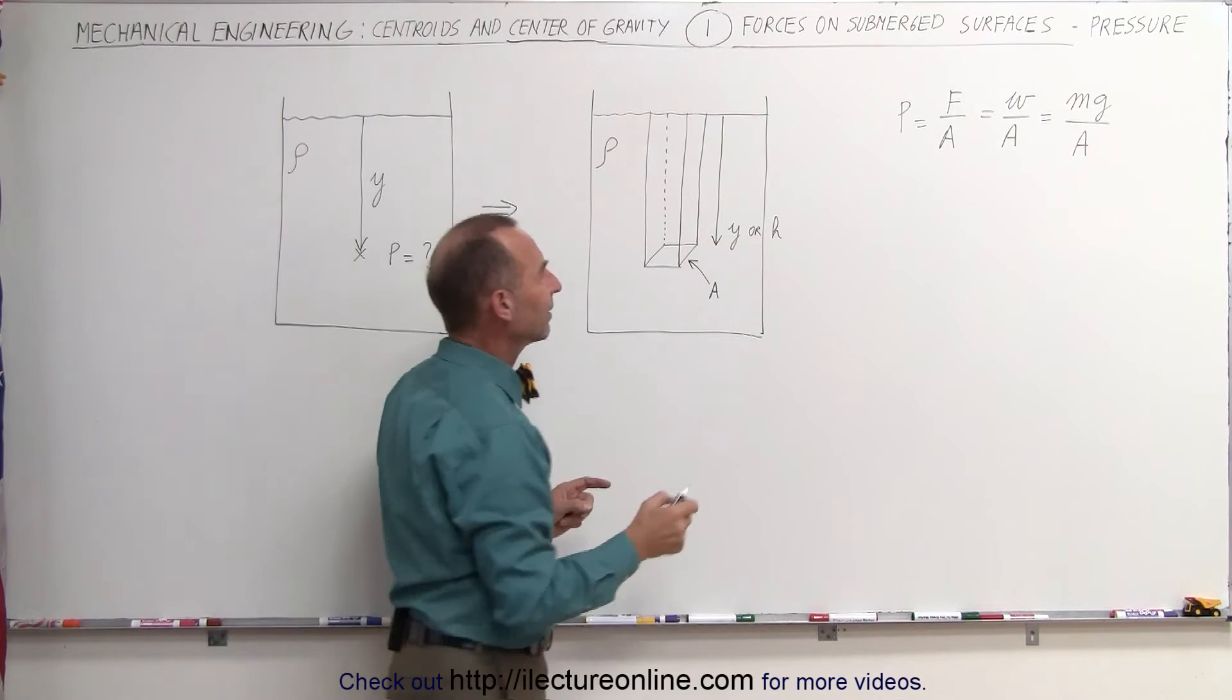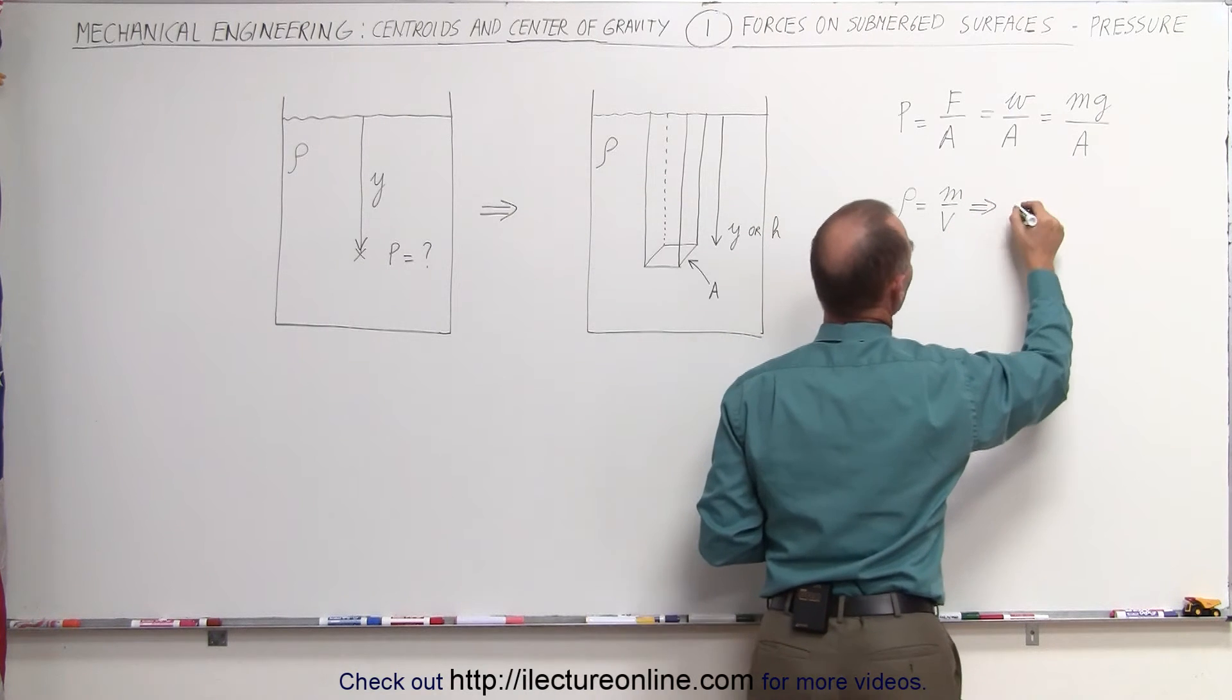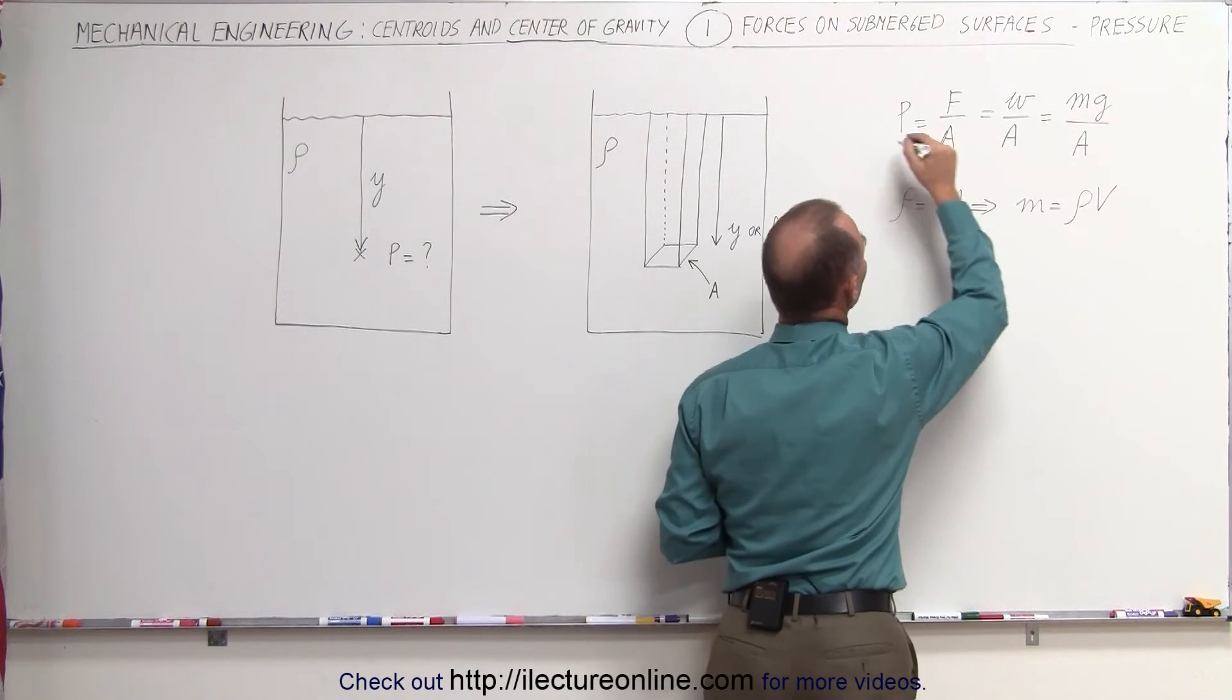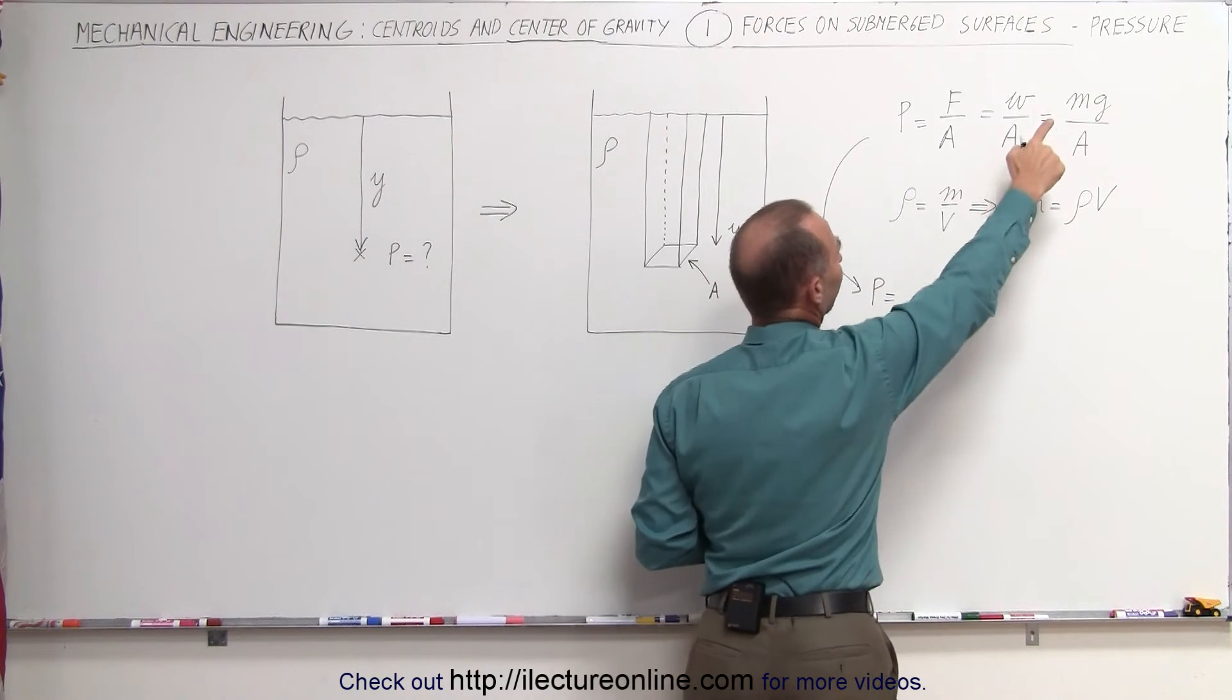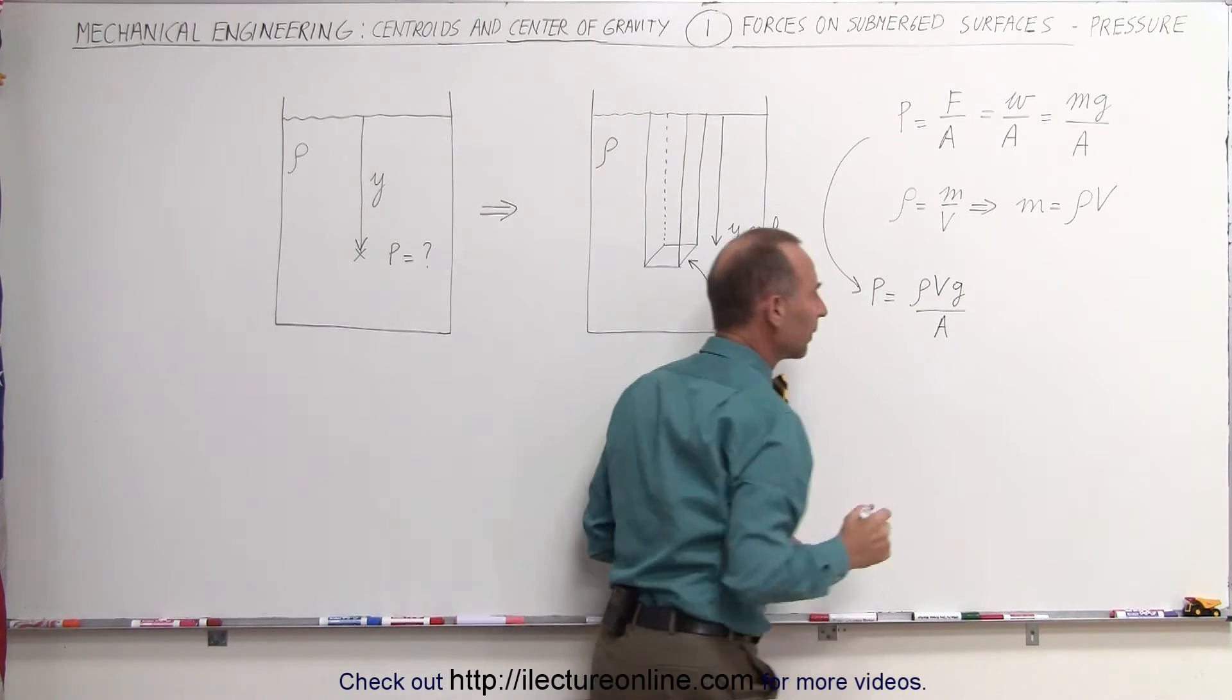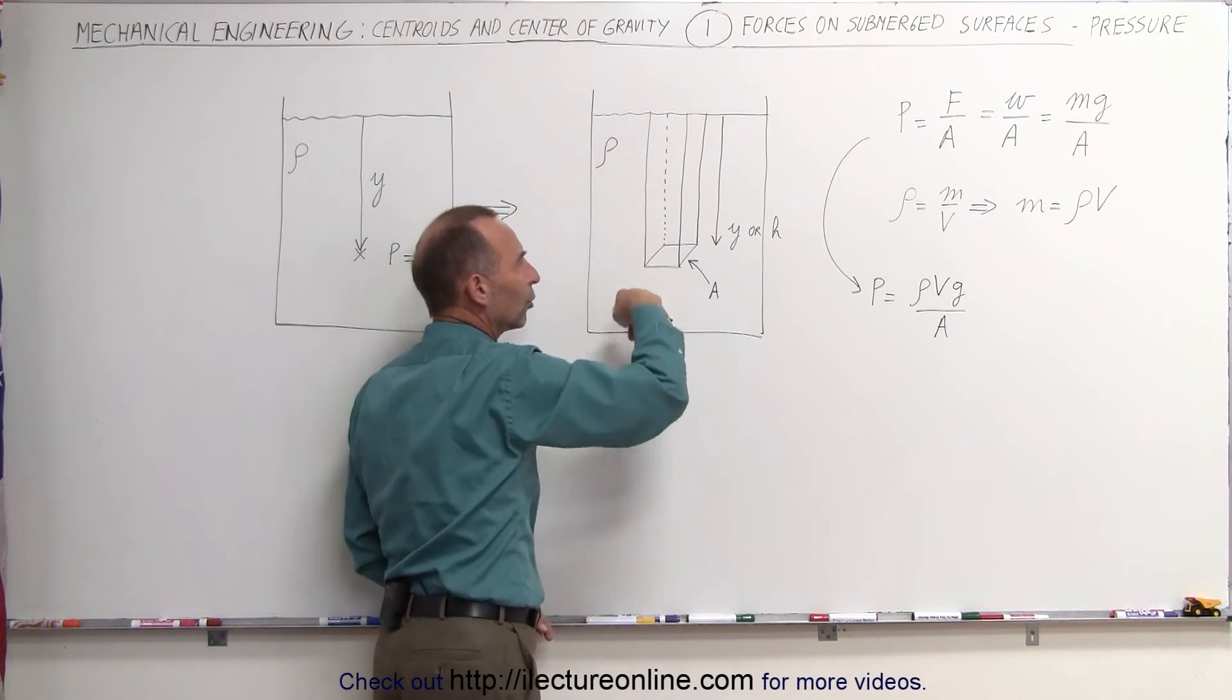Now we also know that the density can be expressed as mass divided by volume, which means we can solve this for mass. Mass of a fluid can be expressed in terms of the density of the fluid times the volume of the fluid. So the pressure is equal to density times volume, we still have the g there, and we have the a here. Now the volume of this water column is equal to the cross-sectional area a times the height or the depth, h.